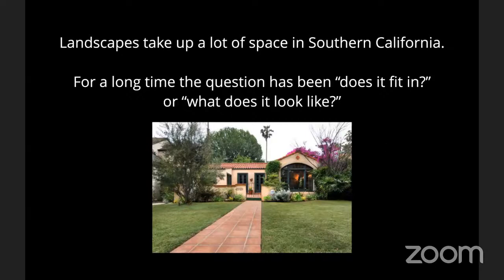We're going to start tonight with a premise for those of us in Southern California. Landscapes take up a lot of space here. If you look at an aerial photograph of most neighborhoods outside of downtown LA, there's actually quite a bit of green — it might not all be the right kind, but there's quite a bit from residential front yards and backyards. For a long time, especially with front yards, the question has been: does it fit in with the neighbors? Or for a few people, it was simply, what does the landscape look like?